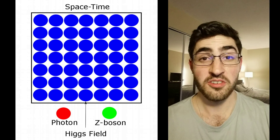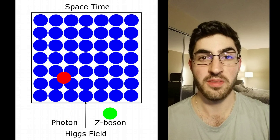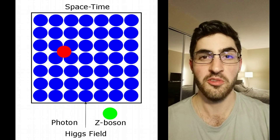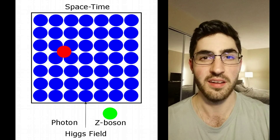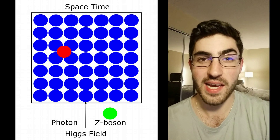Conversely, when the photon tries to move through the Higgs field, it doesn't interact with it at all, and its movement is unimpeded. And hence the photon has zero mass. So there's a space-time pervading field, and it gives some fundamental particles their mass by interacting with them. But how does the Higgs boson tie into any of this?